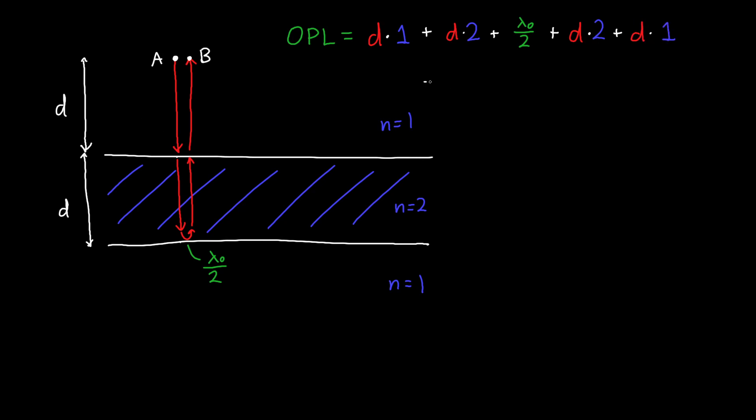And if we add up all these things together, we'll get that this is 2 plus 2 plus 1 plus 1. That's 6D. So we got 6D and then plus lambda naught over 2. This is our total optical path length.